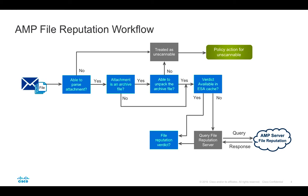The internal ESA AMP cache helps us understand whether a disposition for this file was already acquired in the past and whether it can now be derived from cache. If the cache doesn't contain an entry for this file, ESA will communicate with the AMP cloud — either public or private depending on what you have deployed — to query the file reputation, which returns a verdict of malicious, clean, or unknown. A useful addition in ESA 11.0 is the ability to configure the file reputation cache time-to-live, giving administrators more granular control over cache usage.